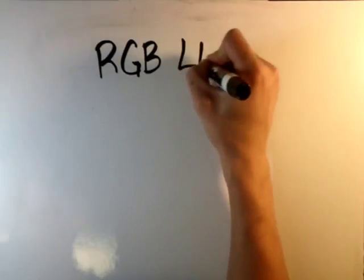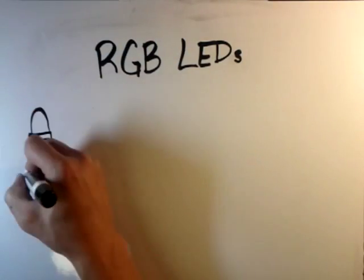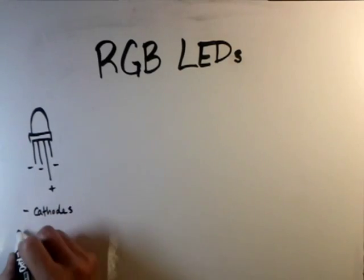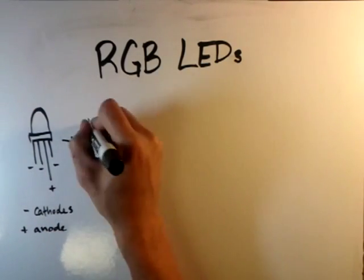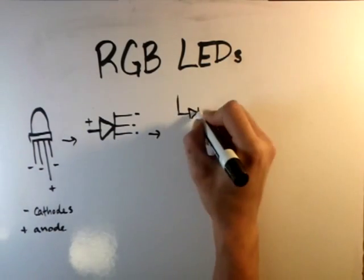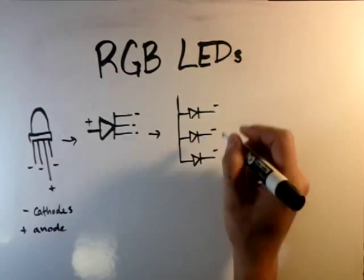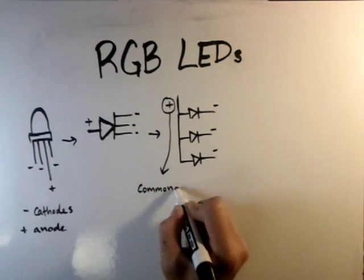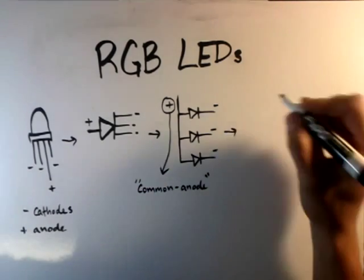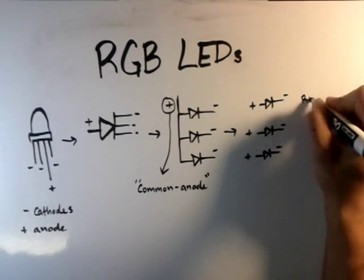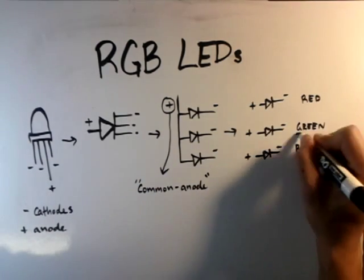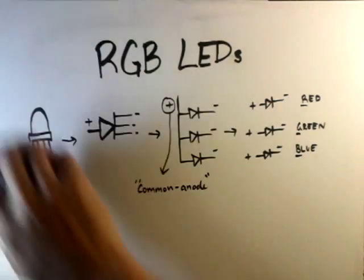In this video we're going to take a look at common anode RGB LEDs, which just means one input for power and three separate grounds for red, green, and blue. We are able to model this as three separate LEDs — one red, one green, and one blue — just so it's easy to understand.